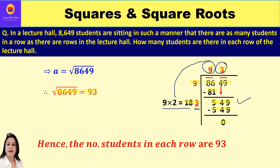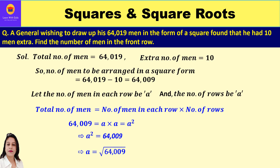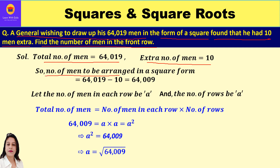The second question: a general wishing to draw up his 64019 men in the form of a square found that he had 10 men extra. Find the number of men in the front row. Total men = 64019; since 10 are extra, the men that can be arranged = 64019 − 10 = 64009.